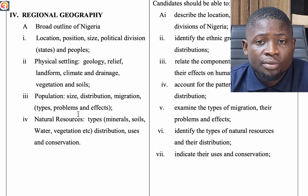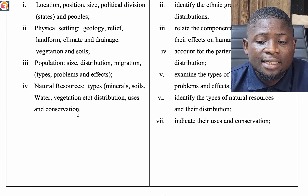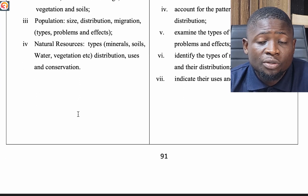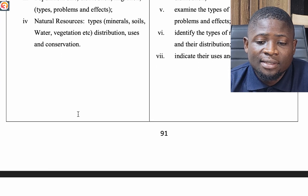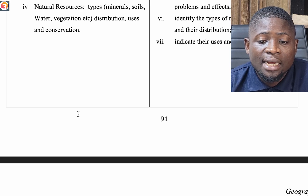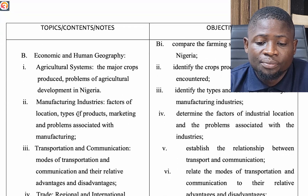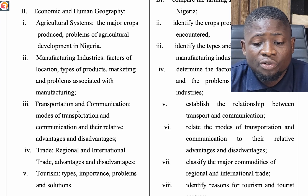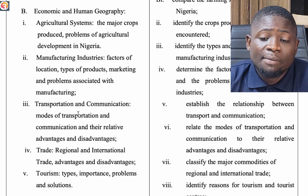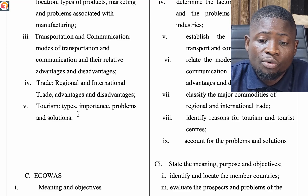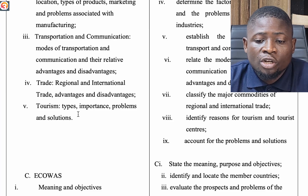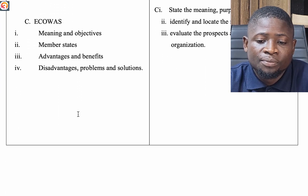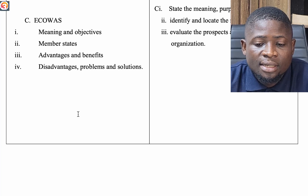Regional geography covers a broad outline of Nigeria: location, position, size, political divisions, states and peoples, physical setting, geology, relief, landforms, climate, drainage, vegetation and soils. We look at population — size, distribution, migration, types, problems and effects. Natural resources — minerals, soils, water, vegetation, distribution, uses and conservation. Economic activities — major crops, problems of agricultural development in Nigeria, industries including location factors, types of products, marketing and problems. Transportation, communication, trade — regional and international, advantages and disadvantages. Tourism — types, importance, problems and solutions. Then ECOWAS: meaning, objectives, member states, advantages, benefits, disadvantages, problems and solutions.